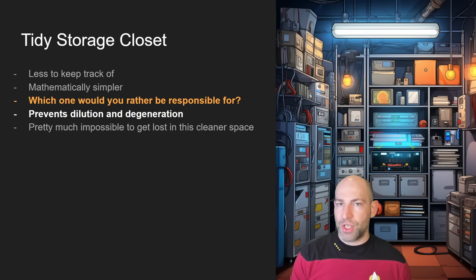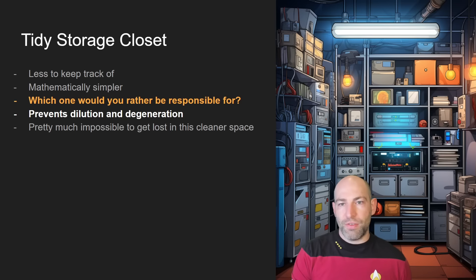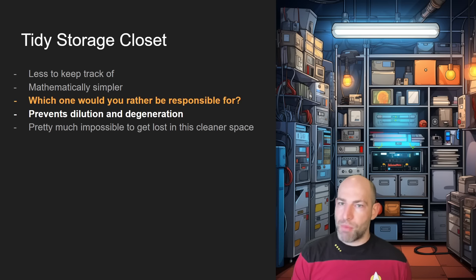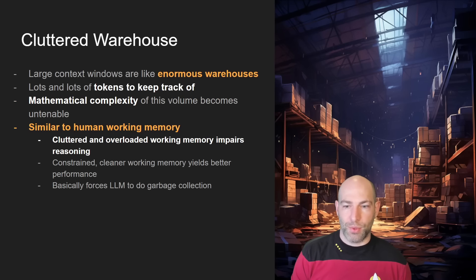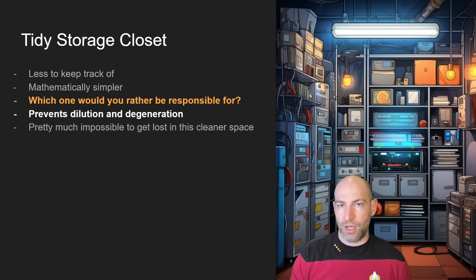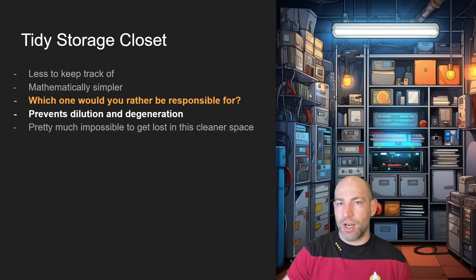Instead of having a gigantic cluttered warehouse to sift through all the tokens in a large context window, this innovation mathematically constrains that working space to more like a tidy, well-organized closet — less to keep track of, mathematically simpler. Which one would you rather organize: a tidy closet with clean labeled shelves, or a gigantic warehouse with stacks of boxes? This analogy is why LLMs with constrained working memory tend to perform better — it prevents dilution by saying: just keep track of the most important tokens and let go of the rest.